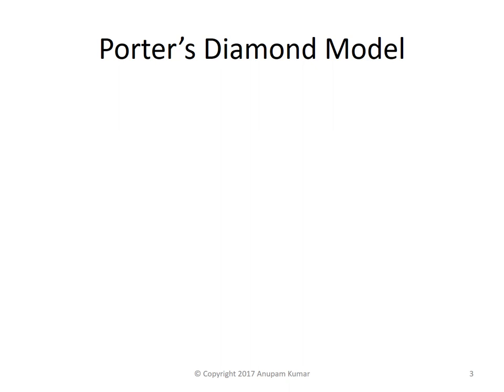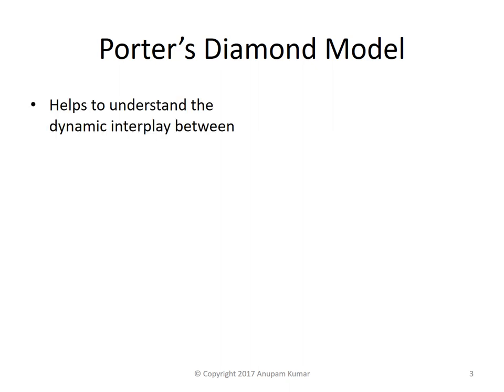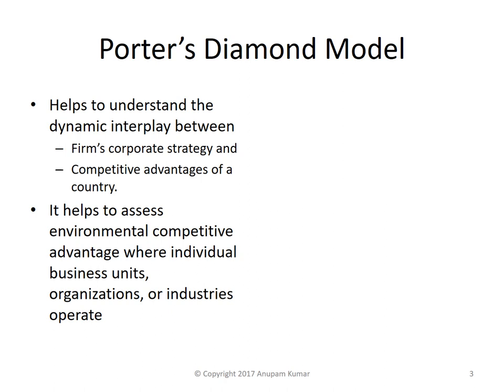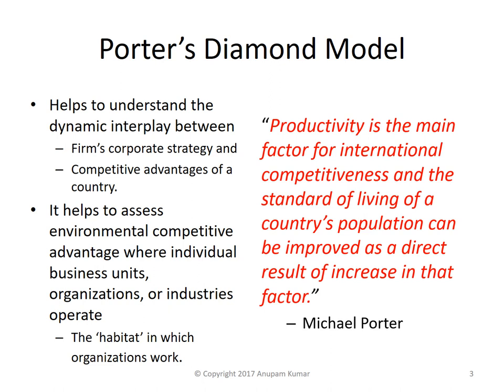Porter's diamond model helps to understand the dynamic interplay between the firm's corporate strategy and the competitive advantages of a country. It helps to assess the environmental competitive advantage where individual business units, organizations, or industries operate — basically the habitat in which organizations work. In the words of Michael Porter, productivity is the main factor for international competitiveness, and the standard of living of a country's population can be improved as a direct result of an increase in that factor.